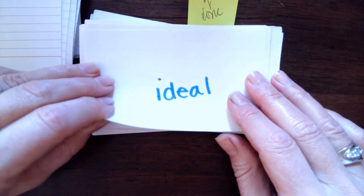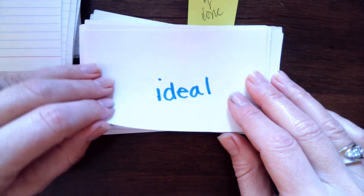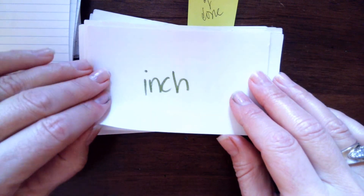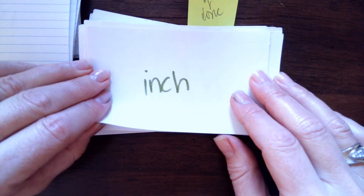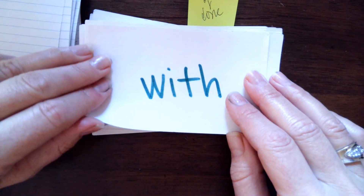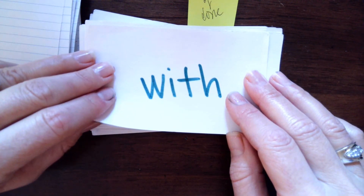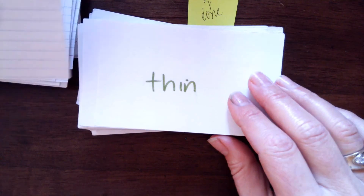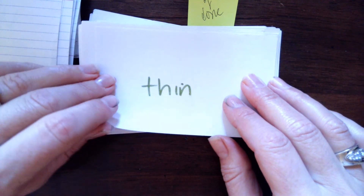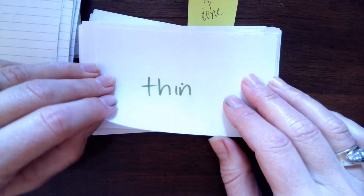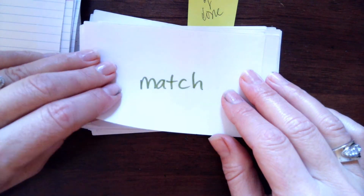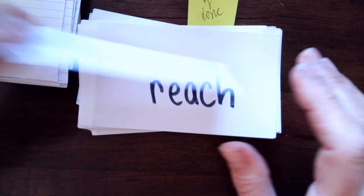E-A makes e — i, di, eel — ideal. C-H makes ch — i, n, ch — inch. T-H makes th — what, i, th — with. T-H makes th — i, n — thin. C-H makes ch — m, ach — match.